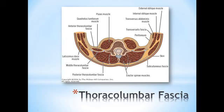Arising from the lateral raphe are the transverse abdominus and the internal oblique. Connecting to the lateral raphe and the posterior fascia are the deeper abdominal muscles attaching to the posterior fascia, which also includes the latissimus dorsi.